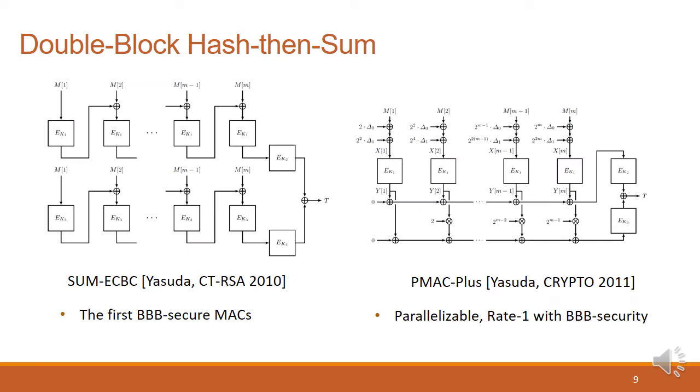Now, let us see the constructions of double-block hashed-and-sum MACs briefly. SumECBC, which is the sum of 2 independent instances of ECBC, was proposed by Yasuda at CT-RSA 2010. As we know, it is the first proven BBB-secure MAC algorithm. In the next year, Yasuda proposed another BBB-secure MAC called PMAC+. PMAC+ is based on PMAC algorithm, and it has merit on its performance since it is parallelizable and also a rate-1 algorithm.